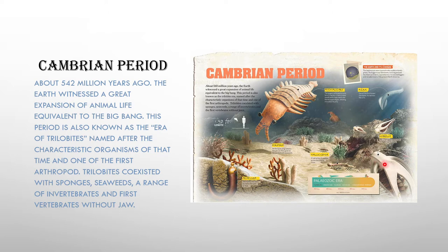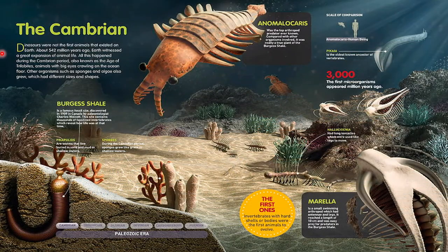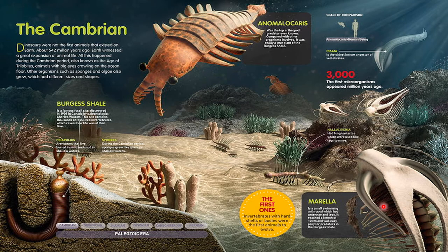Some of the Cambrian creatures include Marrella, Pikaia, Priapulid, Hallucigenia, and Anomalocaris. A larger picture shows the Anomalocaris — it was comparatively small to humans but was one of the first and largest animals of its time. Hallucigenia's tentacles were used as its locomotory organ. Marrella was a small swimming creature about 10 centimeters long, similar to the modern-day jellyfish. Pikaia is considered one of the oldest vertebrates, and Priapulid was a sea worm.